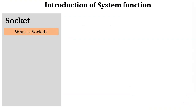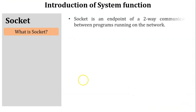Let's start with what is a socket. The socket is an endpoint of two-way communication between programs running on the network. There are two different programs running on two different systems in the network. If both programs want to communicate with each other, a socket will be created by both hosts. So we can say socket is an endpoint of two-way communication.